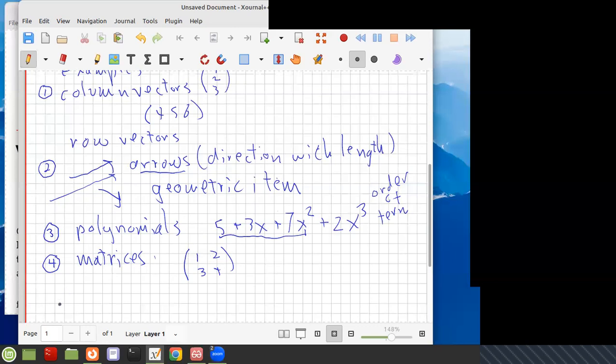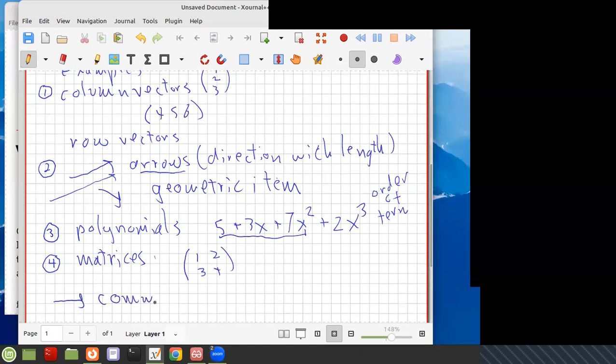So we have these examples, and we're going to look for common properties. And we're going to see all these particular items have a set of properties, so we can say this is what defines a vector, is this behavior. It's not what it looks like.